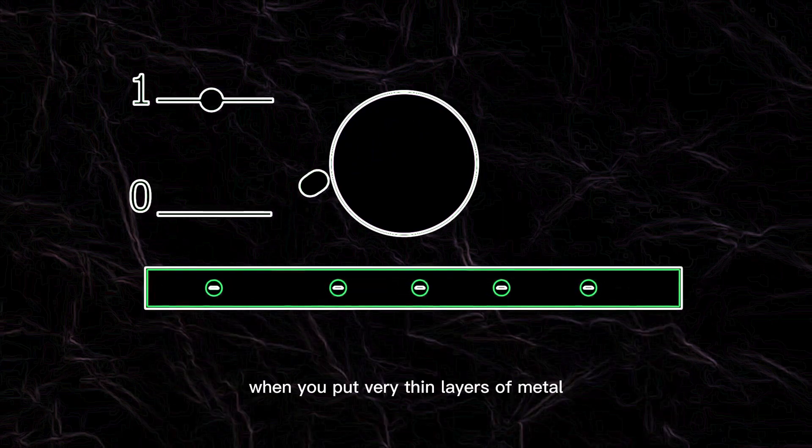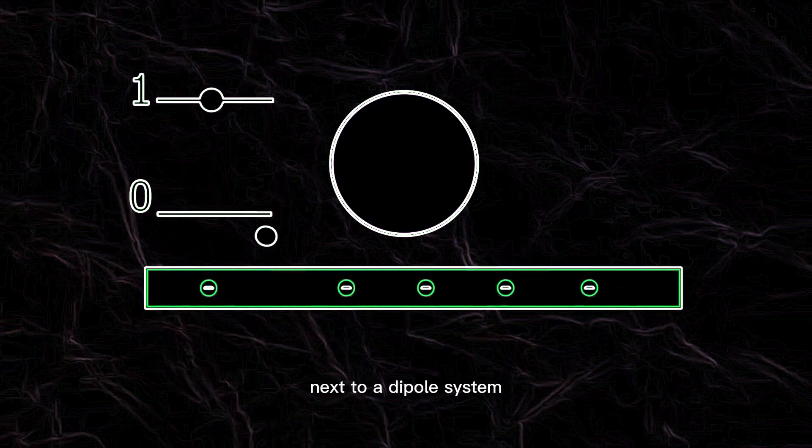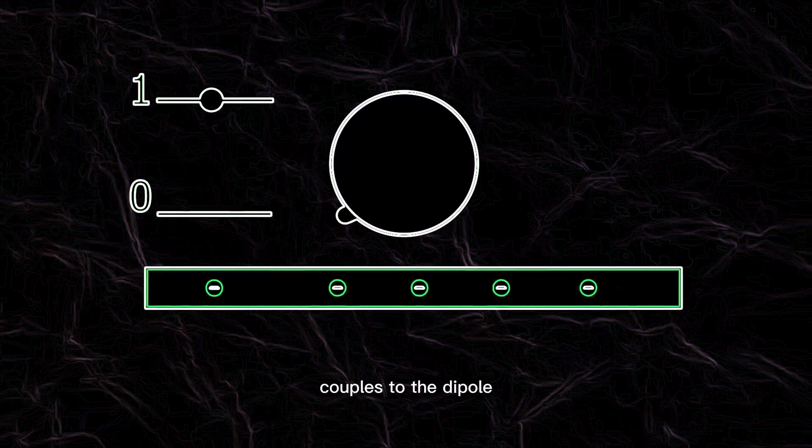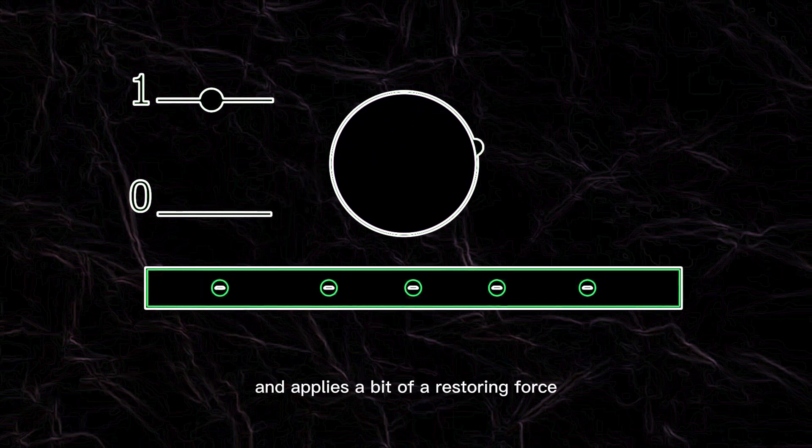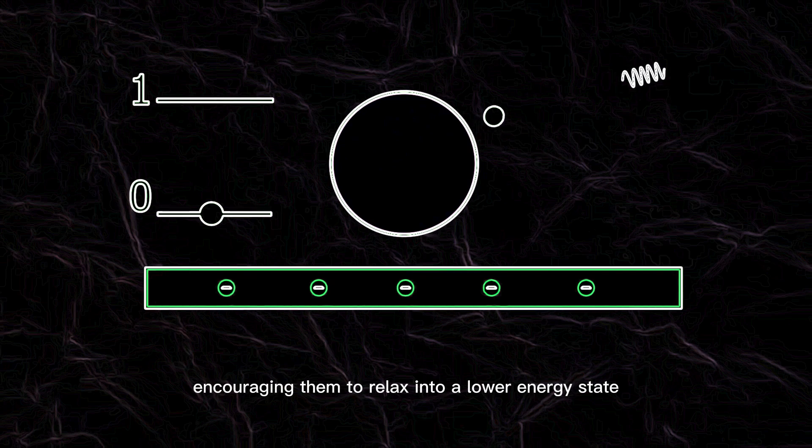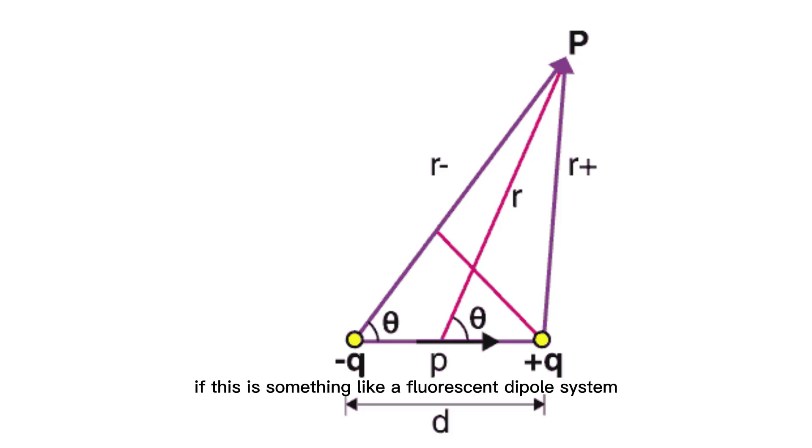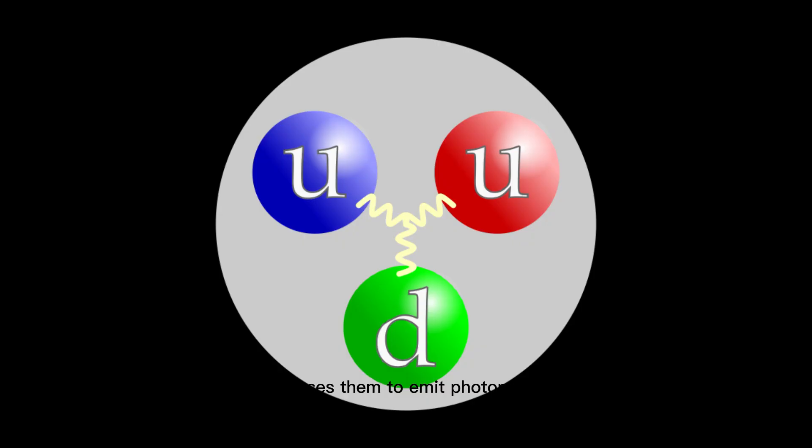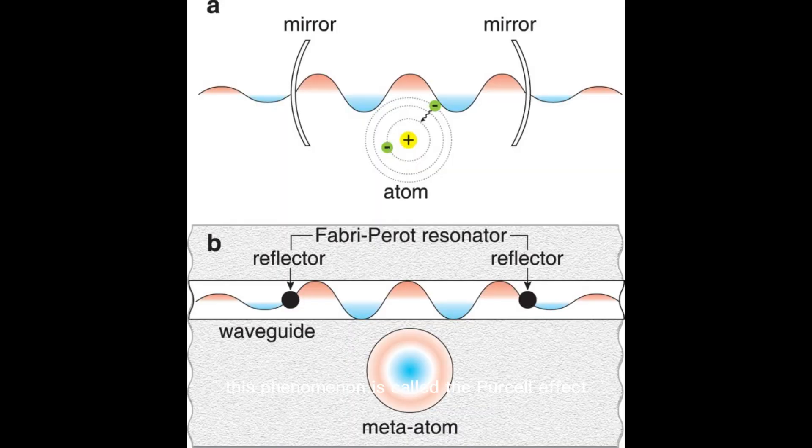When you put very thin layers of metal next to a dipole system, that electron sea couples to the dipole and applies a bit of a restoring force, encouraging them to relax into a lower energy state. If this is something like a fluorescent dipole system, this causes them to emit photons faster because they are collapsing more quickly into an unexcited state. This phenomenon is called the Purcell effect.